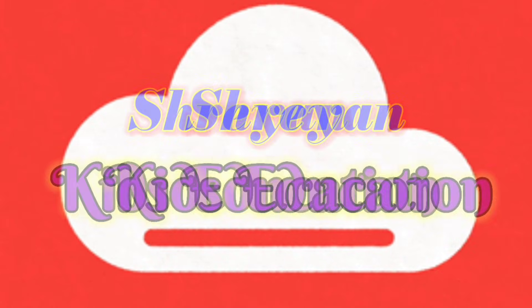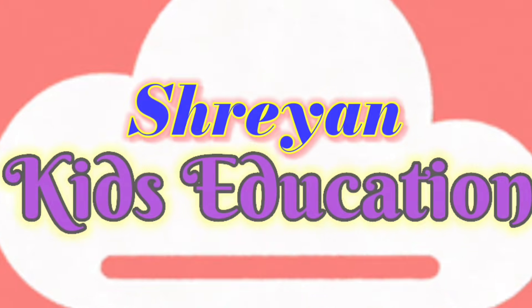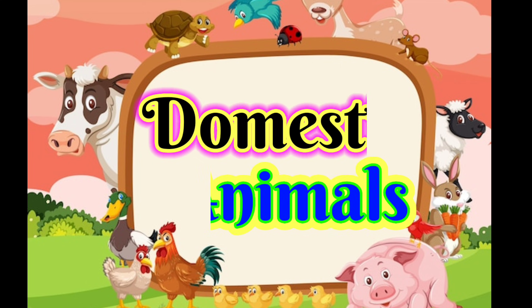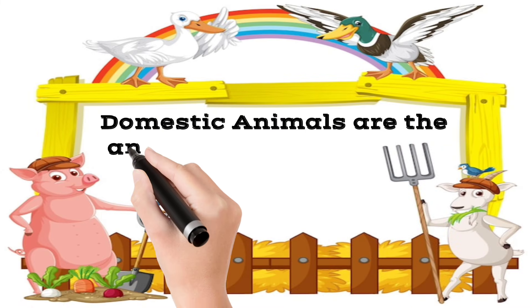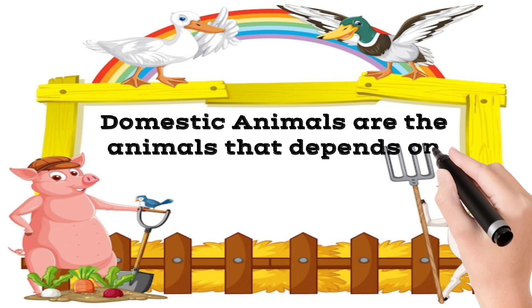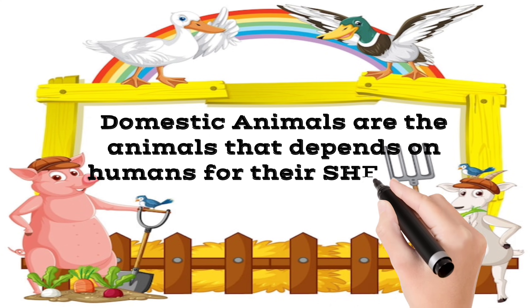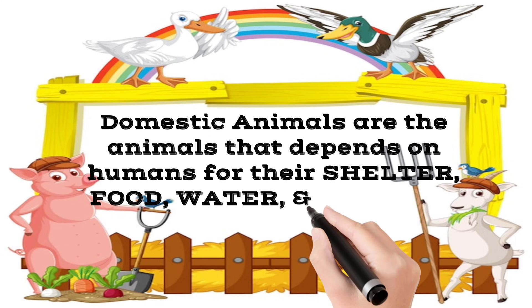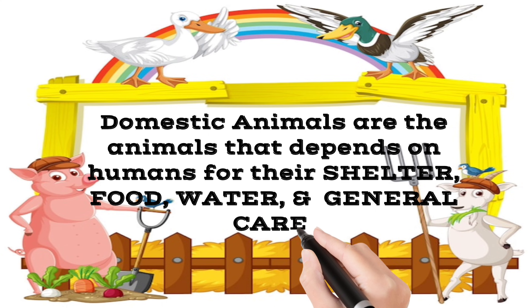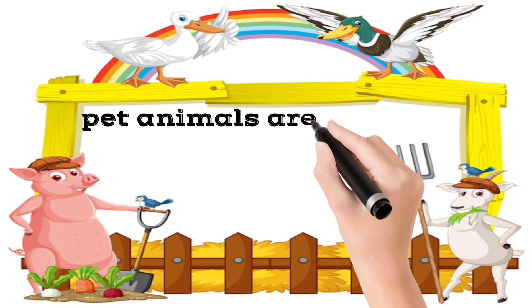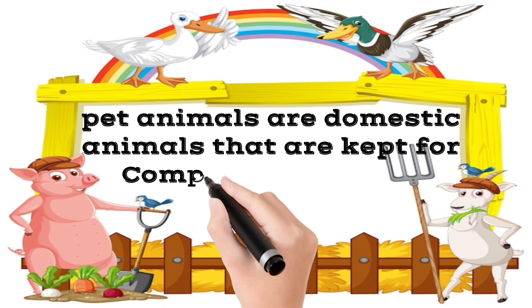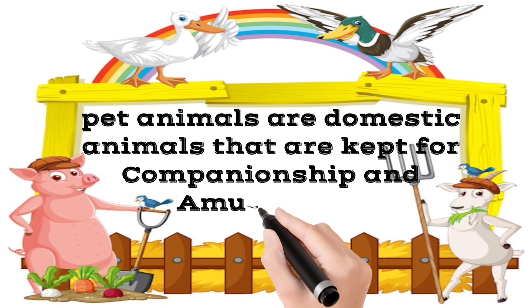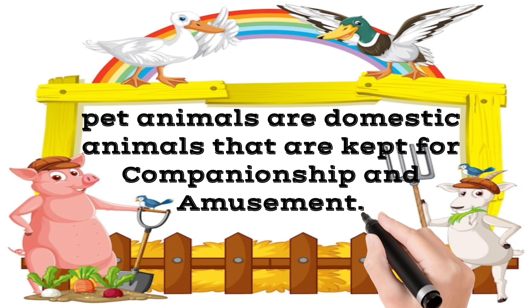Hello friends, welcome back to my channel. Today in this video we will know about domestic animals. Domestic animals are the animals that depend on humans for their shelter, food, water and general care. Pet animals are domestic animals that are kept for companionship and amusement. So let's see few domestic animals.